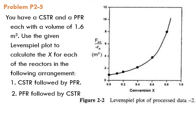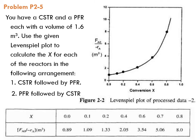You have a CSTR and a plug flow reactor, each with a volume of 1.6 cubic meters. Use the given Levenspiel plot to calculate the conversion for each of the reactors in the following arrangement.